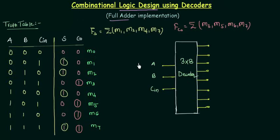So depending upon the different values or different combinations we are having the different outputs because you know the functionality of the decoder. Let me tell you once again if A is 0, B is 0, Cin is 0, it means that this output will be considered and this output is nothing but your M0.